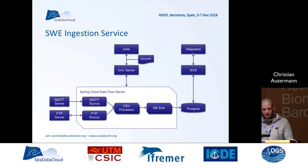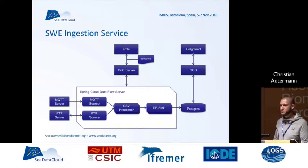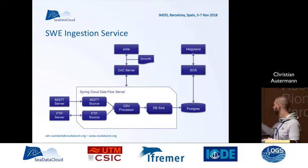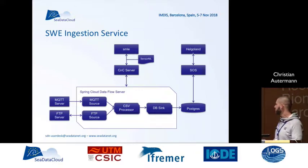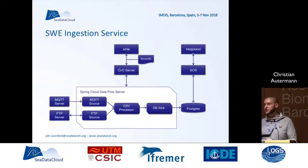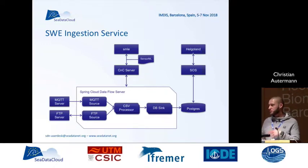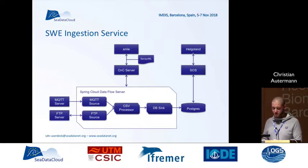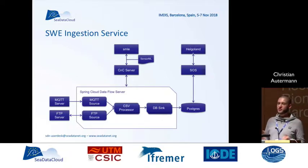We had two main use cases. One is the MQTT server from the Marine Institute, which produces every second a few data points. We feed these into an MQTT source, process it via a CSV processor which parses the data, creates observations from it, and dumps it into a Postgres database. Another use case was an FTP server with CSV files that are updated regularly. We pull them at a regular interval, pushing them through the same processors and sinks to get them to the SOS instance. The SOS reads from this Postgres database, and we display it via the Helgoland client, which is our SOS viewing service.